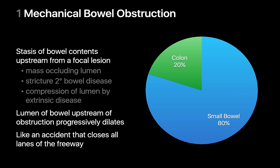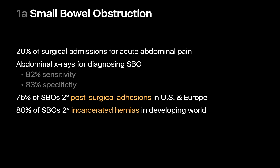Mechanical bowel obstructions occur when an intraluminal bowel mass, bowel stricture, or external mass effect obstructs the normal downstream transit of bowel contents. When an obstruction occurs, the backup of bowel contents causes the bowel upstream of the obstruction point to progressively dilate and become filled with a combination of fluid and gas. Small bowel obstructions happen much more often than large bowel obstructions, outnumbering them 4 to 1, and account for a fair share of all surgical admissions for acute abdominal pain. Abdominal x-rays are reasonably sensitive and specific for their diagnosis.